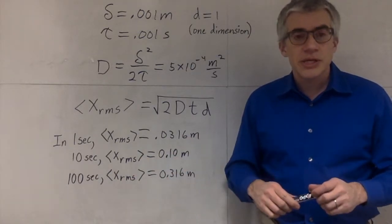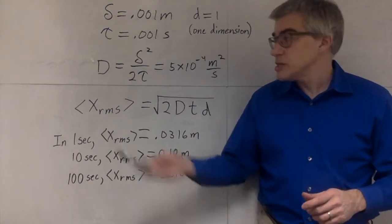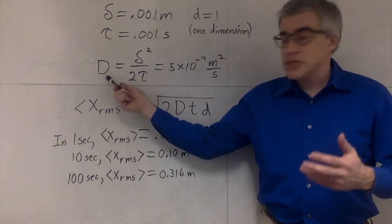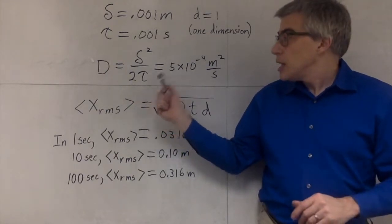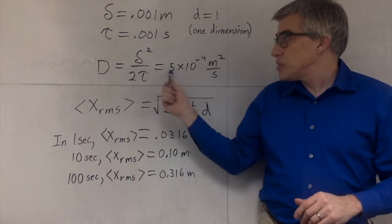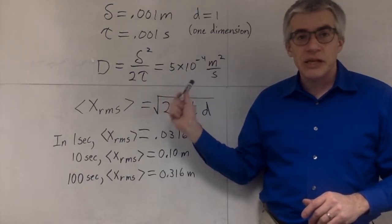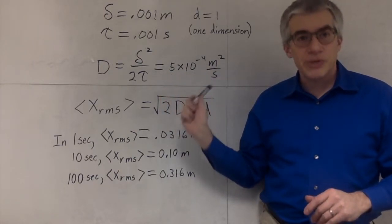It turns out, the diffusion coefficient, capital D, can be described as delta squared over 2 tau, for technical reasons. And in this example, that would work out to be 5 times 10 to the negative 4, meters squared per second.